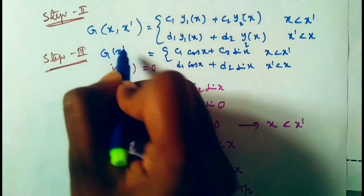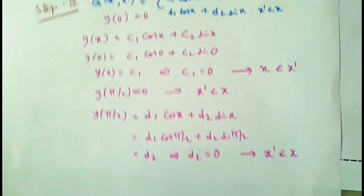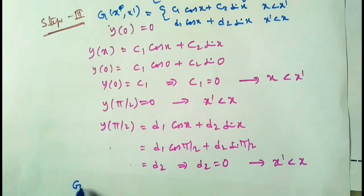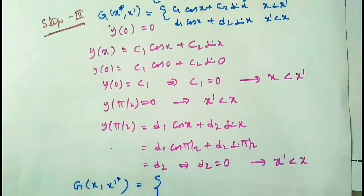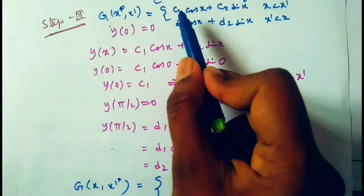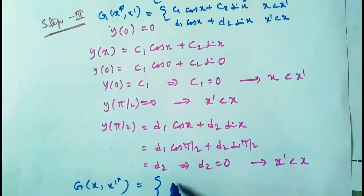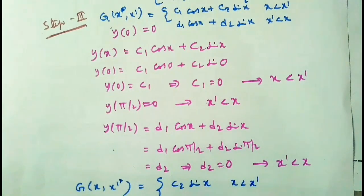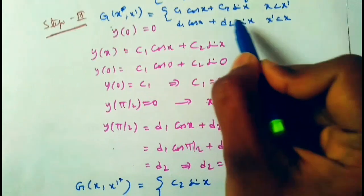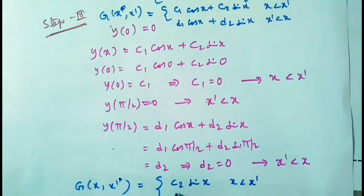The Green's function becomes: G(x, x') = c2·sin(x) for x less than x-dash (since c1 = 0), and d1·cos(x) for x-dash less than x (since d2 = 0).